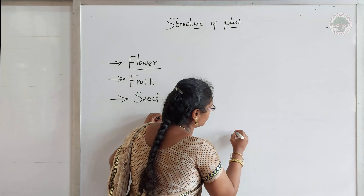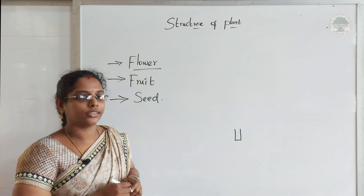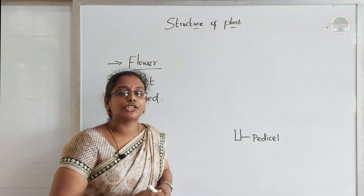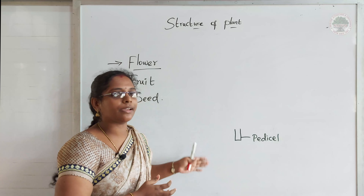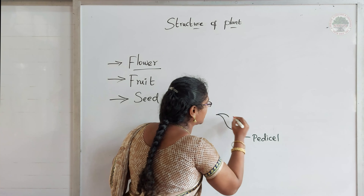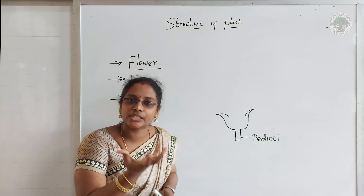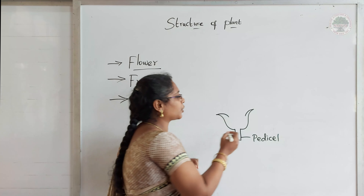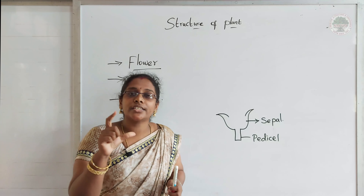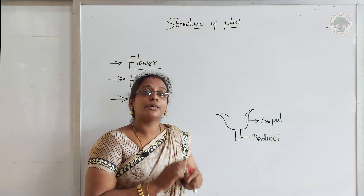So what are the reproductive parts of a plant? The first one is flower, then fruit, and the last one is seed. First we are going to discuss about flower — specifically the structure of the flower. If you see the flower, you could see a stalk that is called the pedicel. This pedicel helps the flower to attach to the stem region. So the first part is pedicel.